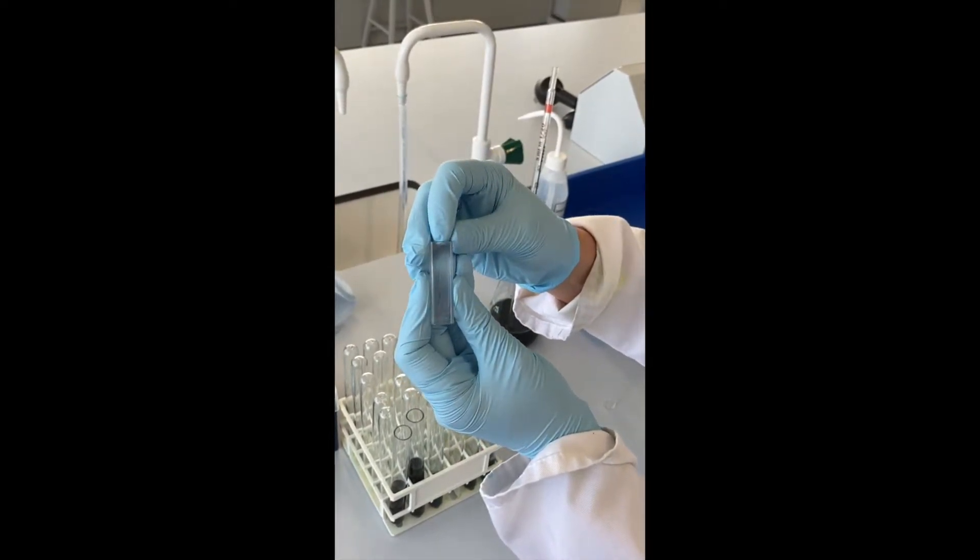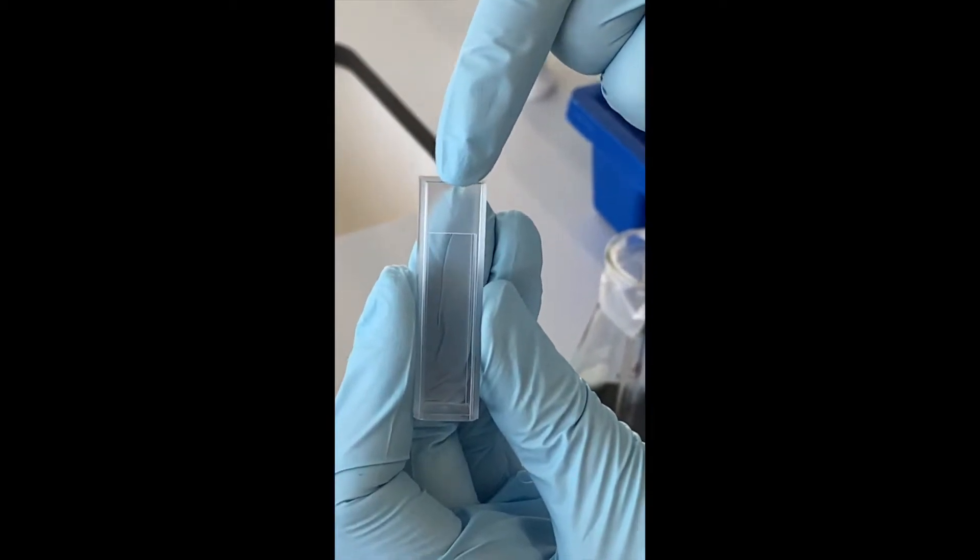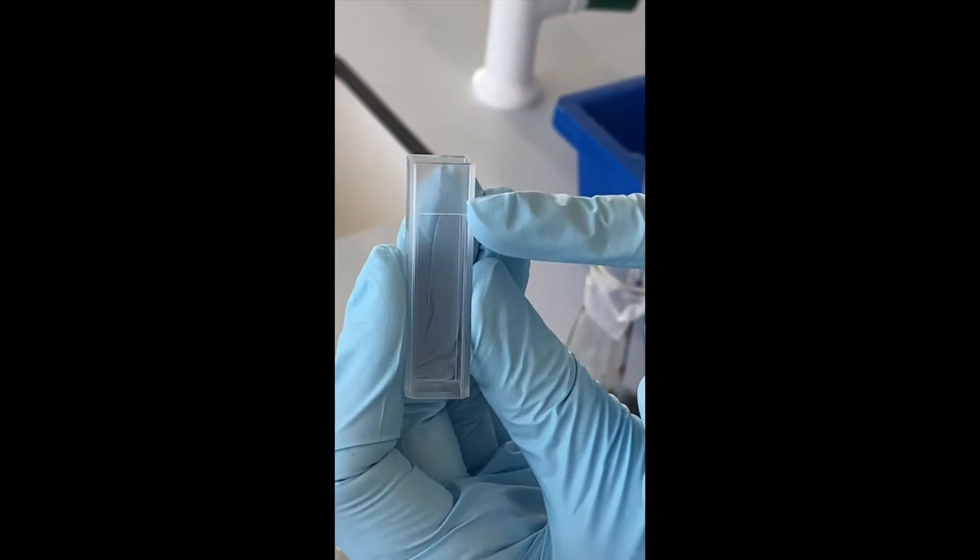The first thing you want to check is where the fill line is in your cuvette. There's a little triangle on one of the sides. To the bottom of this triangle is where you want to fill up.